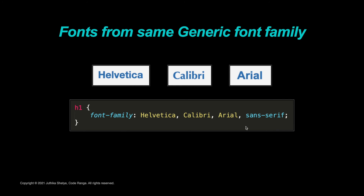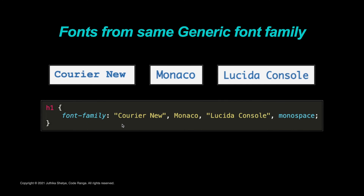So, to get the desired look on your webpage and to maintain the design and layout of your page, always try to choose fonts that look similar and always include a generic font last. This generic font family name should match the declared font names. For example, Helvetica, Calibri, and Arial all belong to the sans-serif family, so include sans-serif at the end. And Courier New, Monaco, and Lucida Console belong to the Monospace family. Also, the generic font names must always be declared without any quotes.